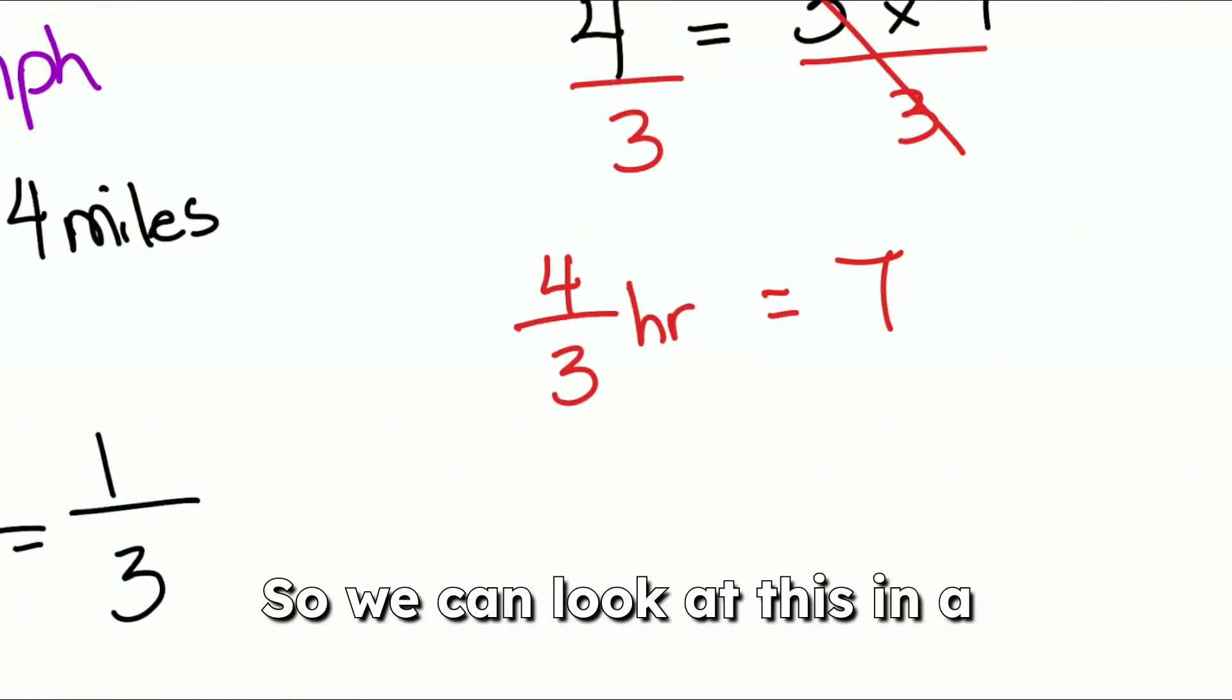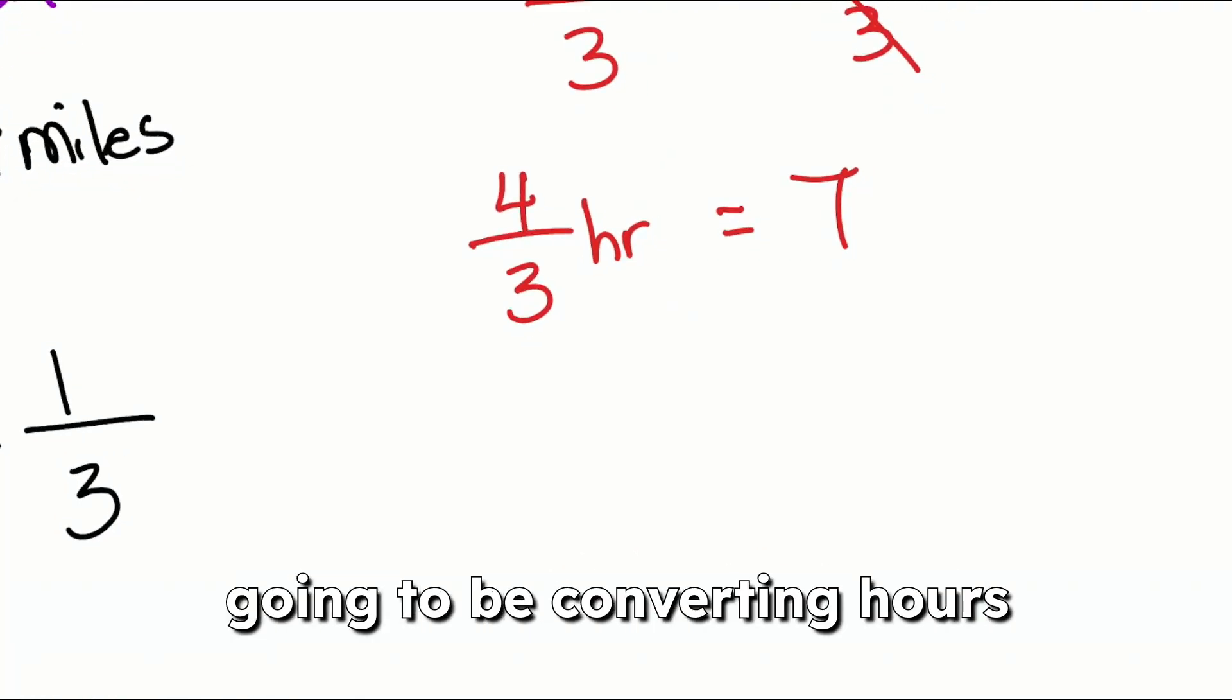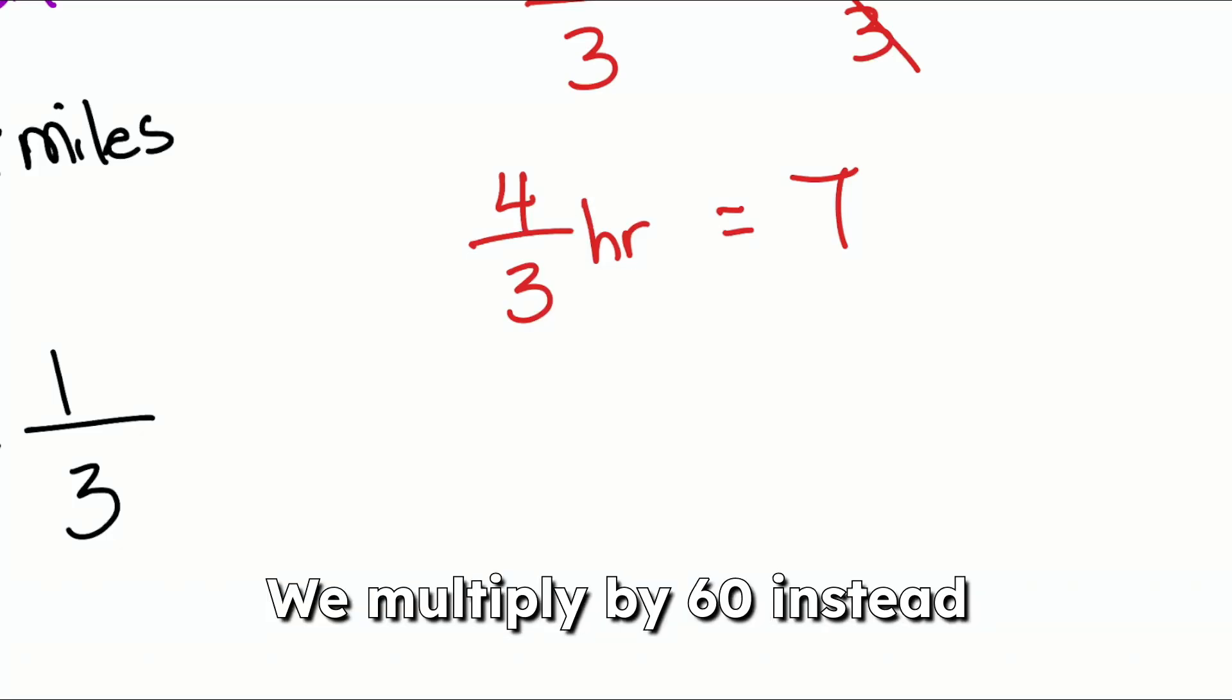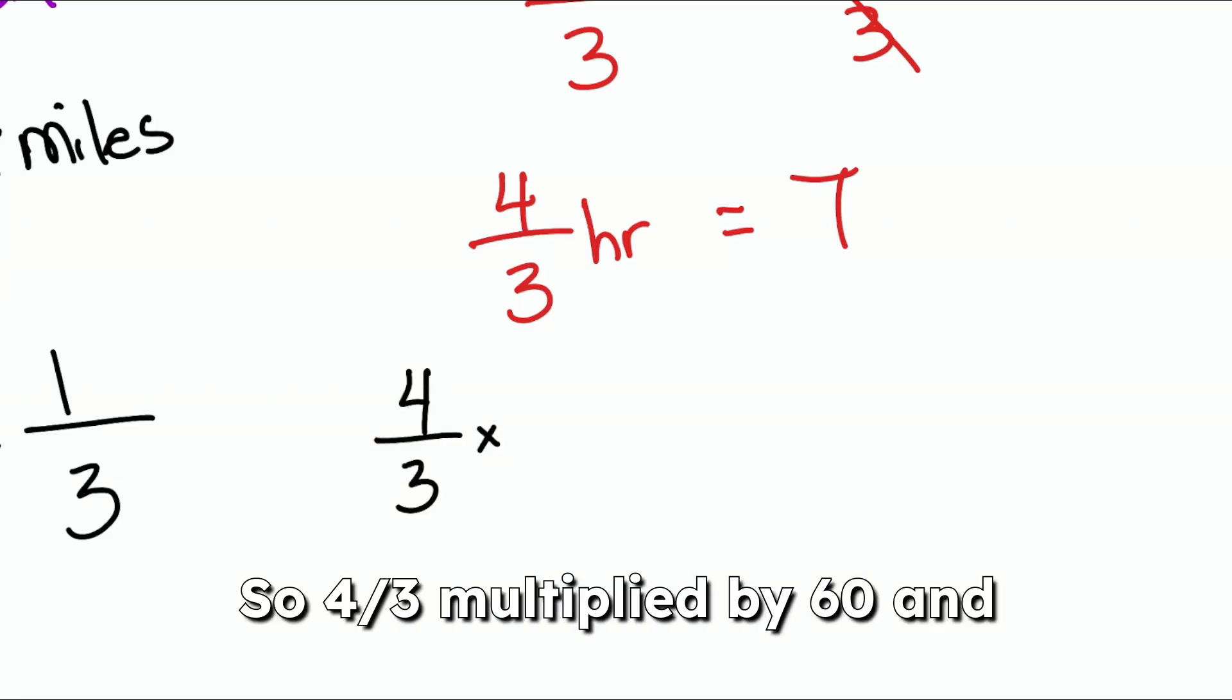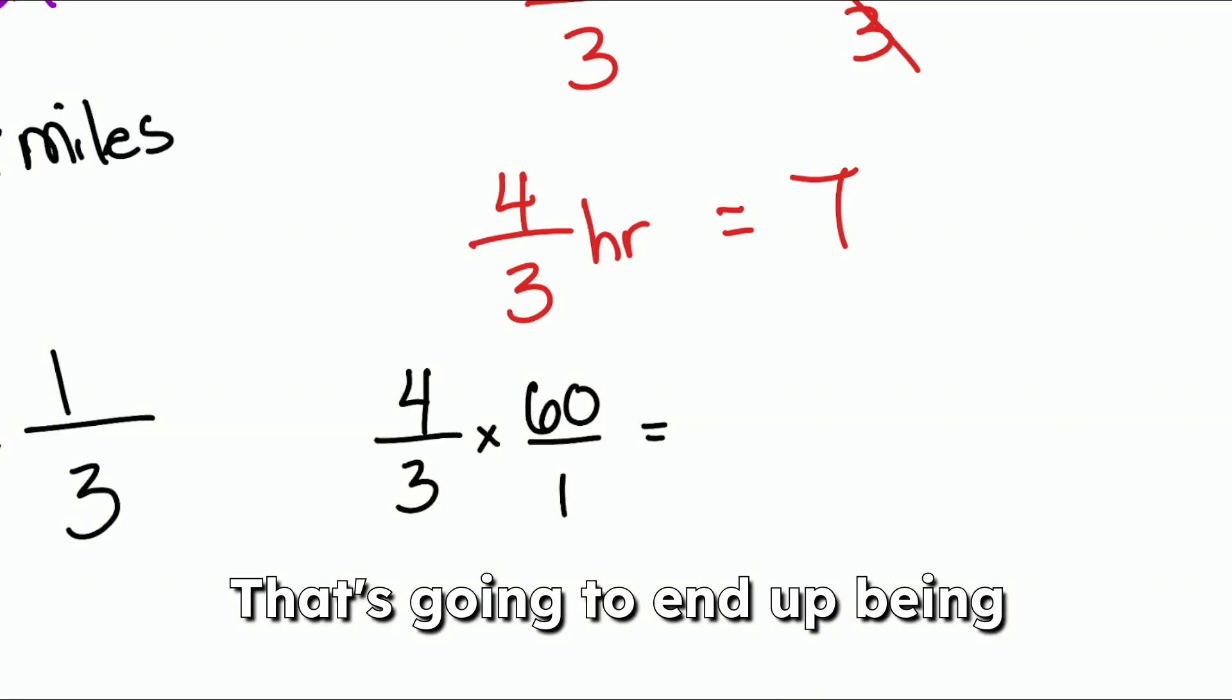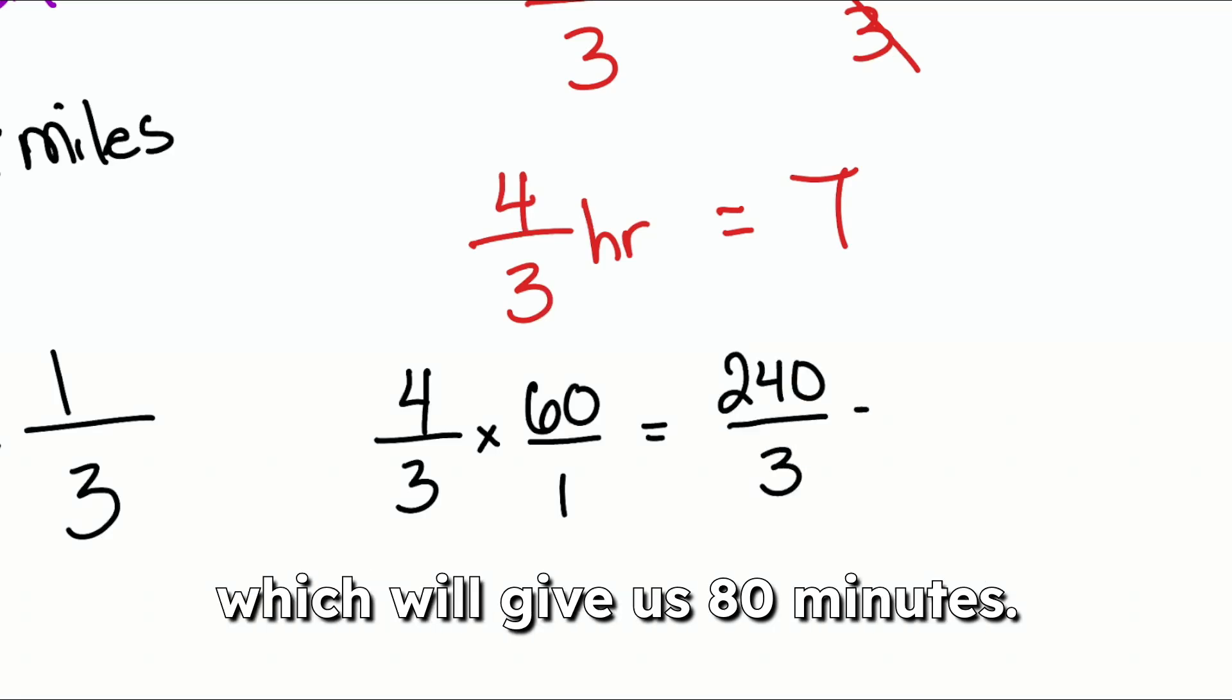So we can look at this in a couple of different ways. But the easiest way really is going to be converting hours into minutes. To go from hours to minutes, we multiply by 60 instead of dividing by 60. So knowing your unit conversions being fluid with that, it's going to be all too important. So four thirds multiplied by 60, and that can be 60 over one. That's going to end up being four times 60 is 240 over three, which will give us 80 minutes.